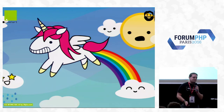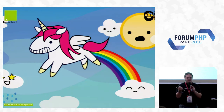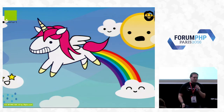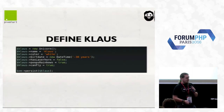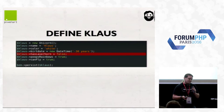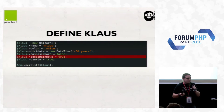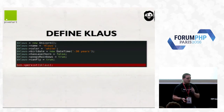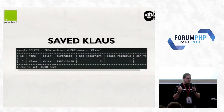This is Klaus, our unicorn for today. Klaus is white, he can fly, and he can poop rainbows. So, we create a new Unicorn instance, name it Klaus, it's white, it's 30 years old, it has no laser horn, but it poops rainbows and it flies. Let's save it to the database — that's the magic of an ORM.